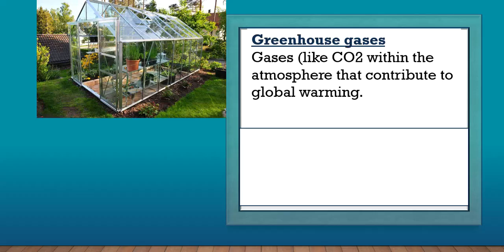Now we want to explain greenhouse gases. Think of an actual greenhouse — many farmers use greenhouses. The greenhouse keeps heat in for plants that need it, trapping the heat of the sun so that plants always have warmth, even at night or in cold conditions. We can see in the picture that the greenhouse absorbs heat.